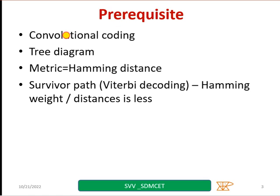One should know convolutional coding, tree diagram, how to draw. And in this discussion, metric is nothing but the Hamming distance and survivor path, the way how we have done in Viterbi decoding. Here also, we are going to find a survivor path considering the Hamming distance, Hamming weight. Wherever it is less, that path will be selected.